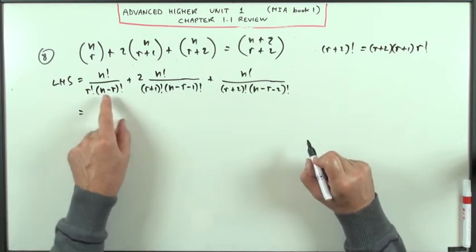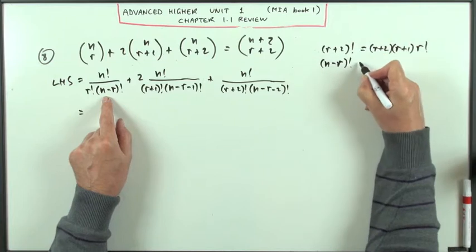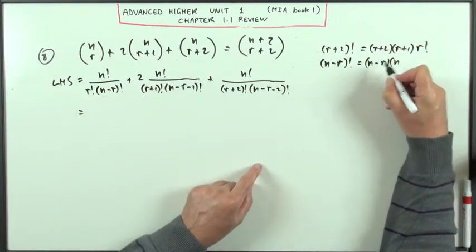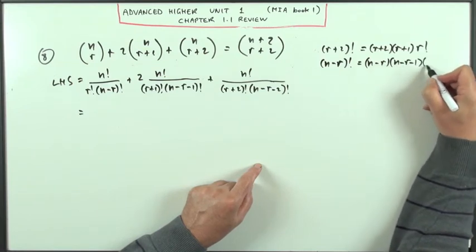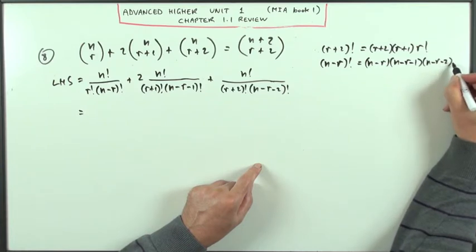Similarly, the largest of these is n minus r factorial because that means n minus r times one less than that, n minus r take away one, times one less again, n minus r minus two, only if I'm stopping there, I'll just say factorial to indicate the rest of them. I don't need to refer to that when it comes to getting the correct numerators.